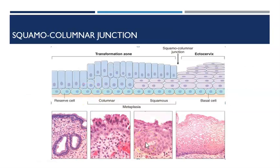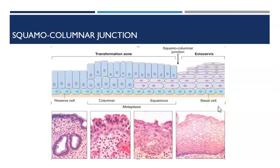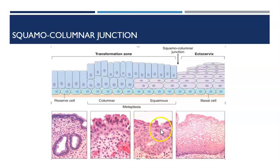This slide shows the squamous columnar junction. On the ectocervix we have the squamous cells, on the endocervix we have the columnar cells or secretory cells, and then we have this transformation zone where we have a mixture of the two. On histology we see squamous cells on the ectocervix and a more glandular, secretory appearance on the endocervix, then a transition of cells where we get a slightly different cell type. If any of these cell types end up on a cervical smear they could look like transformed pre-malignant cells. When I talk about squamous columnar junction later on, that's where those cells come from.